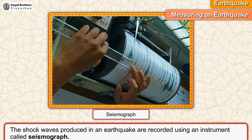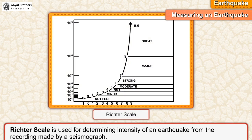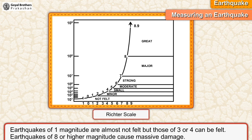The shock waves produced in an earthquake are recorded using an instrument called a seismograph. It measures the intensity, direction, and duration of earthquakes. Richter's scale is used for determining the intensity of an earthquake from the recording made by a seismograph. The Richter's scale starts from 1 and upward. Earthquakes of 1 magnitude are almost not felt, but those of 3 or 4 can be felt. Earthquakes of 8 or higher magnitude cause massive damage.